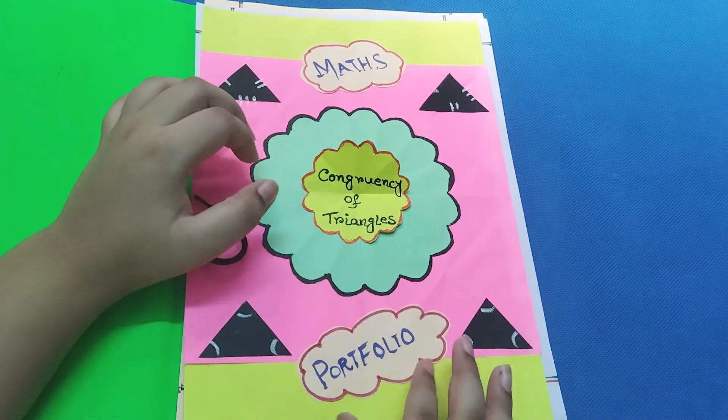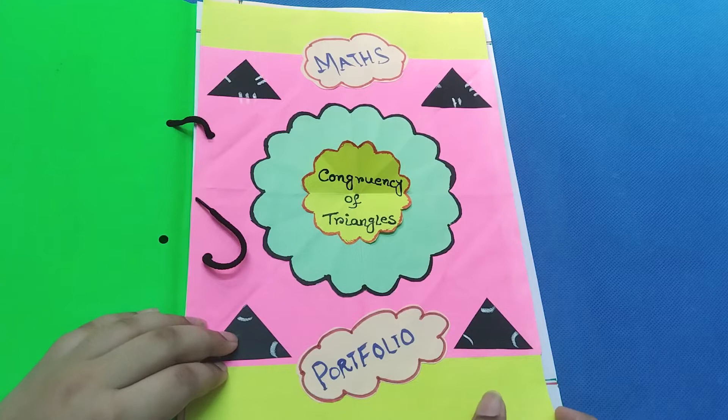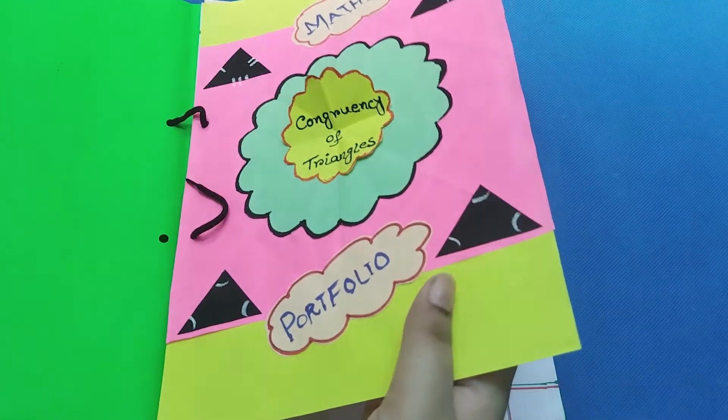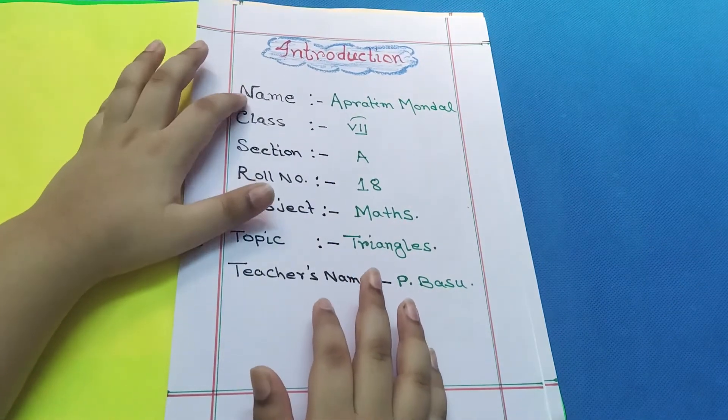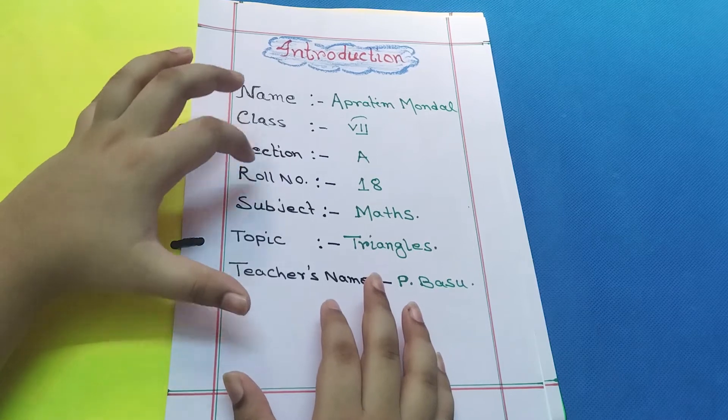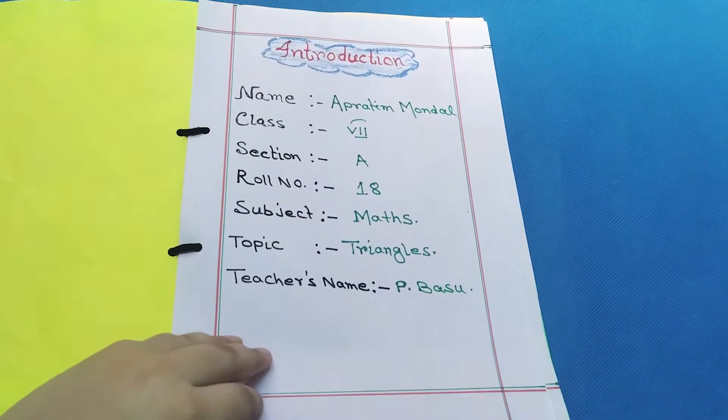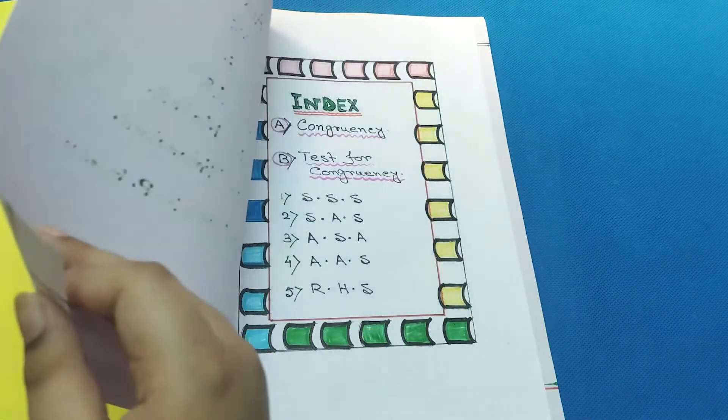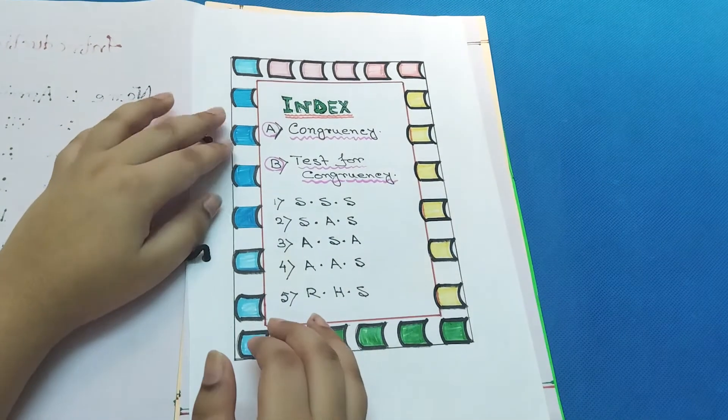Let's look at the next page. This is the introduction. Here you write your name, class, section, roll number, subject, topic, and teacher's name. Next we go to the index.